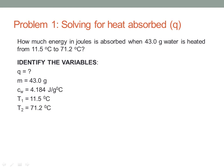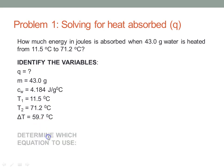So then you calculate delta T, and delta T is always T2 minus T1. In this case, 71.2 minus 11.5 comes out to 59.7 degrees C. Now we need to determine which equation to use, and our equation is Q equals M times C times delta T.